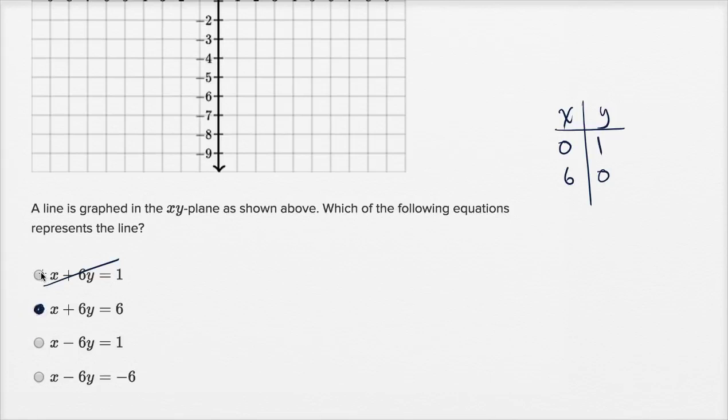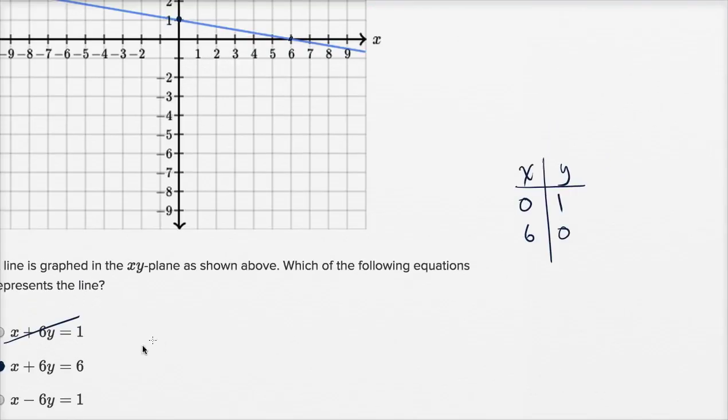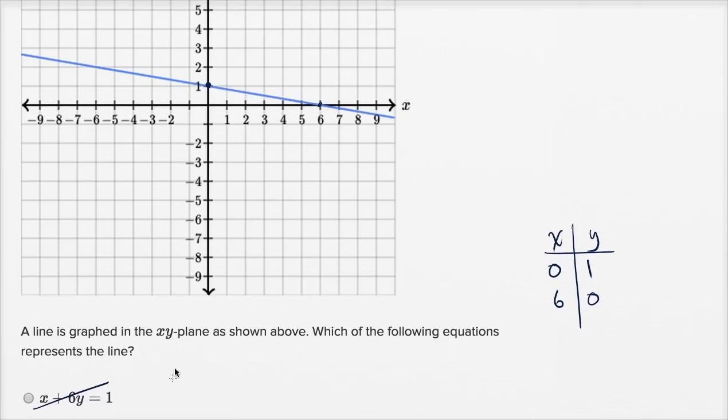Now there's other ways that we could do it. We could write it first in slope-intercept form and then convert to this form right over here. So let's do it that way as well. So we could say that the equation of this line is going to be y, if I write it in y equals mx plus b form, where m is the slope and b is the y-intercept. We already know that b is equal to one.